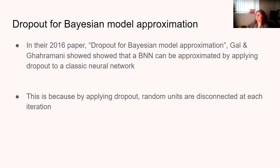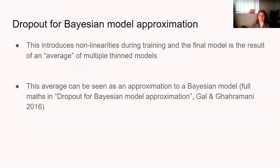However, Galen Ghahramani showed in 2016 that you could use dropout to approximate a BNN very well — which is great, because dropout can cut so much time from training. At each iteration, random units are disconnected, which introduces nonlinearities, giving you a bunch of smaller random-connected models. The end result of the trained model is essentially an average of all these randomly connected models, and that is quite an accurate approximation of a Bayesian model. If anyone has the appetite for the maths, there is a great paper — and the original 2016 paper also has some Keras code.